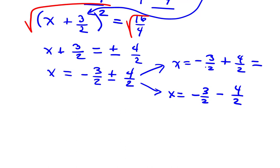Of course, when we simplify these, we'll end up with 1/2 as the first option. -3 + 4 halves is 1/2. Or the second option, -3 - 4 halves would be -7/2. And there we have our two solutions found by completing the square.